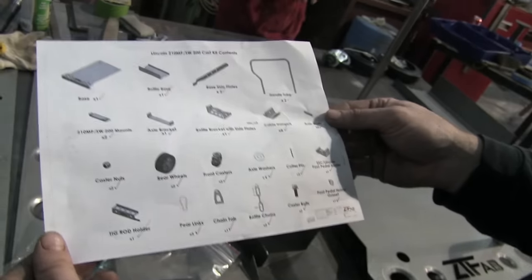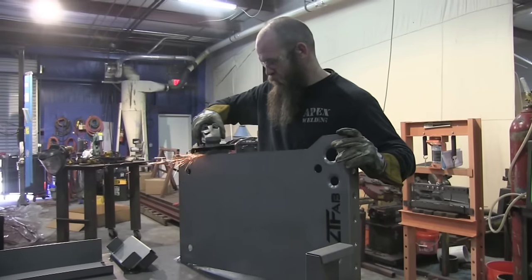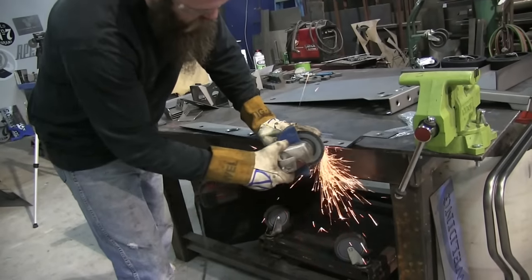All right, even though it's got nice clean cut edges on it, it was cut with plasma, and we're going to pretty much do TIG today. So I'm going to do a quick clean on all the cut edges everywhere it's going to be welded, just using a flap disc.